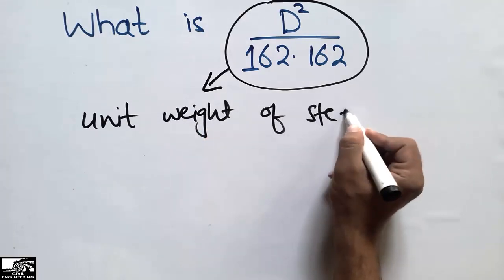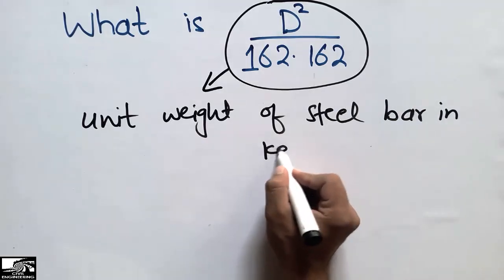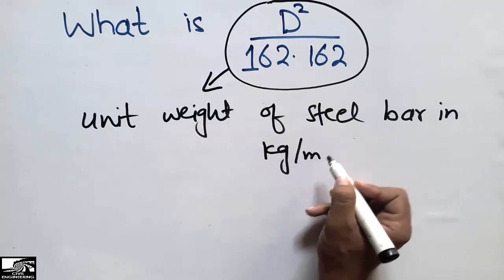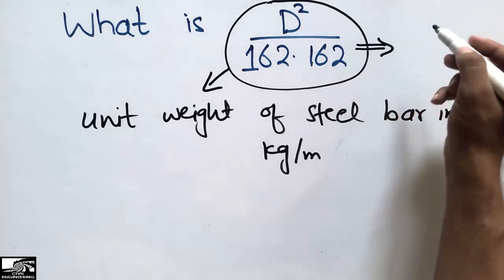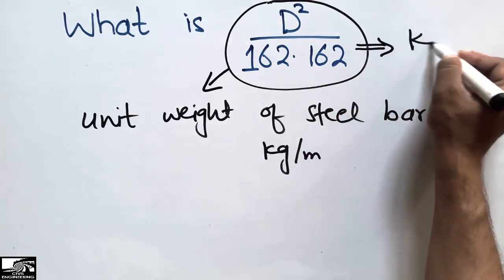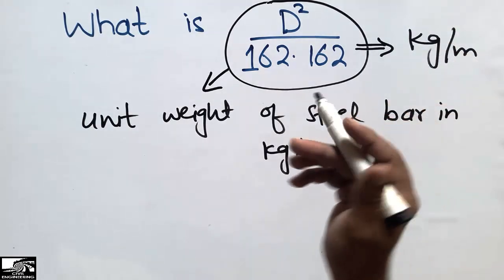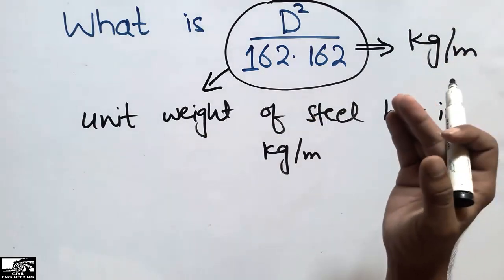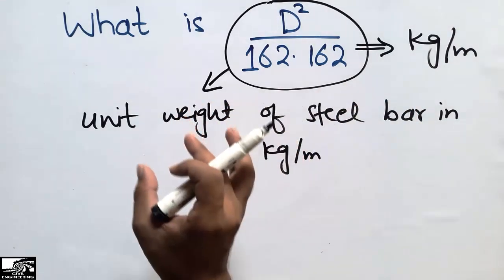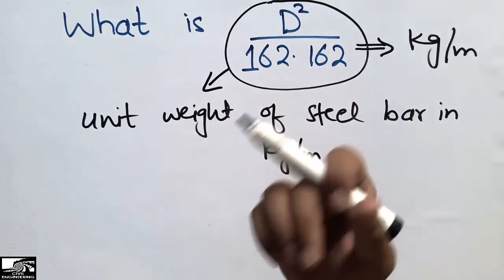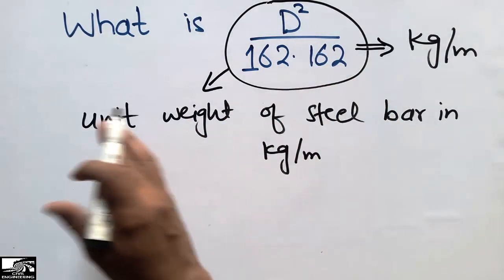This formula gives us the unit weight of a steel bar in kilogram per meter. From this formula we can then find the total weight of a steel bar. I will also do a complete example to show how we find the weight of a steel bar using this formula.